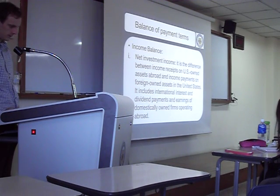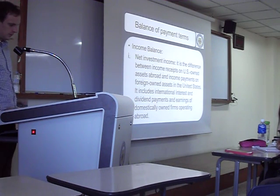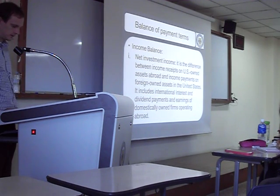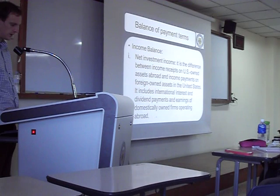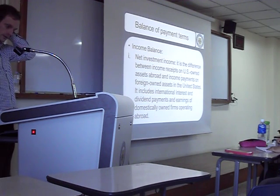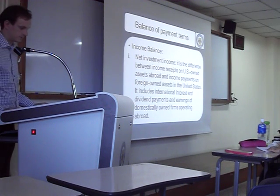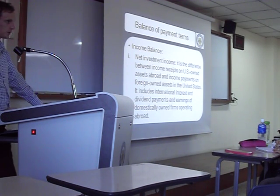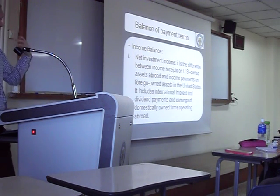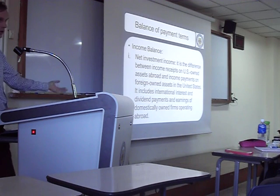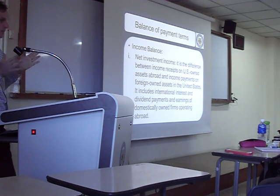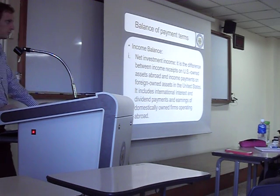The income balance is the net investment income — the difference between income on US-owned assets abroad and income payments on foreign-owned assets in the US. It includes interest, dividend payments, and earnings of domestically owned firms operating abroad. The interest payments are in the current account. The principal is in the capital account because it's long-term, but interest is more short-term so we put it in the current account.